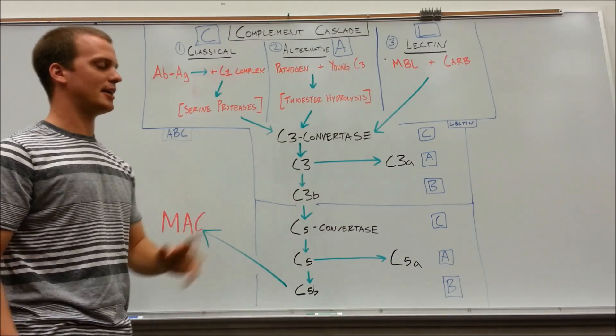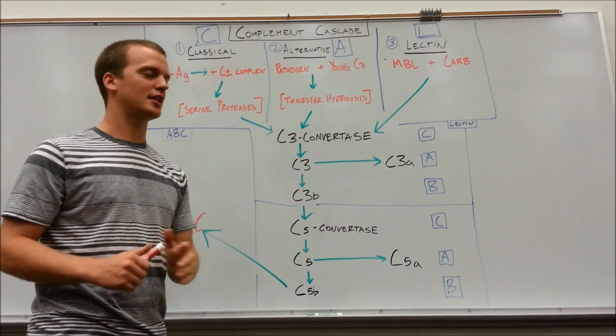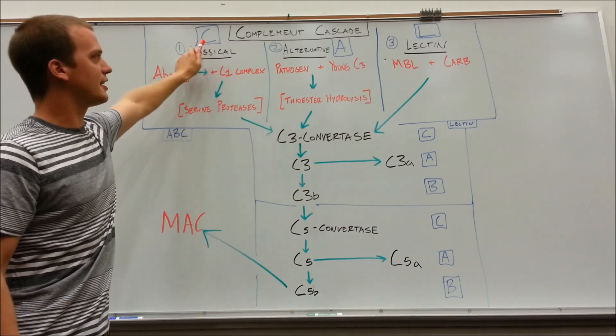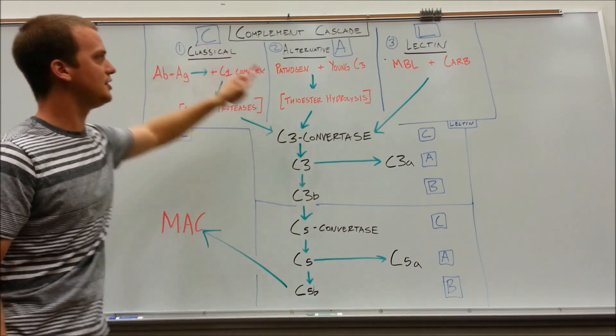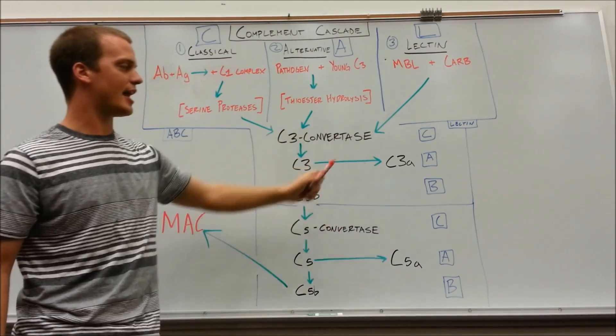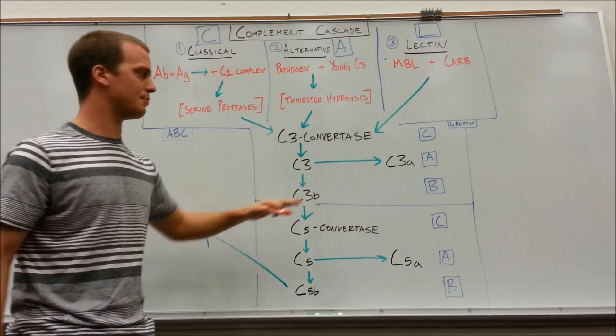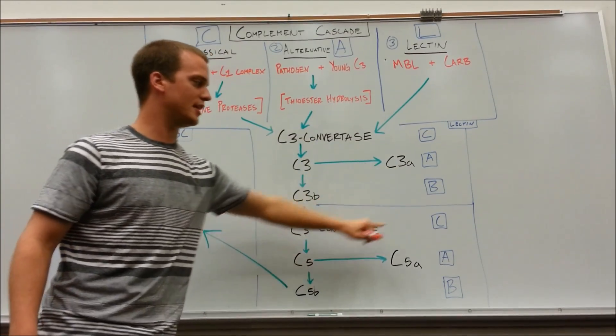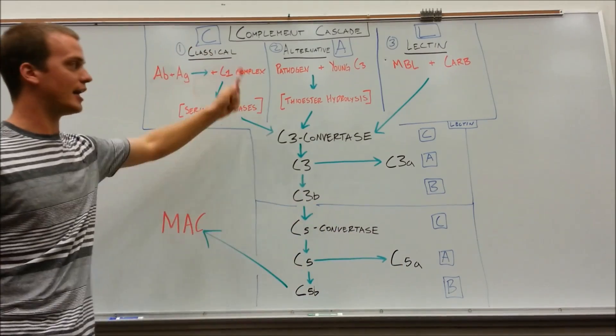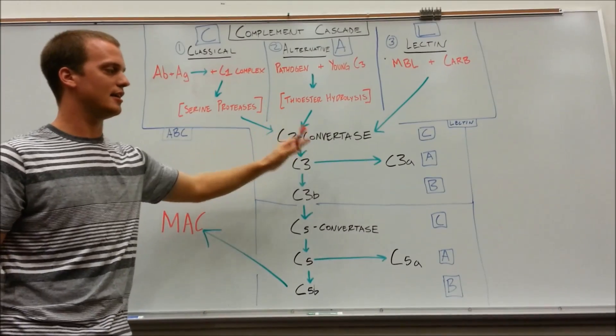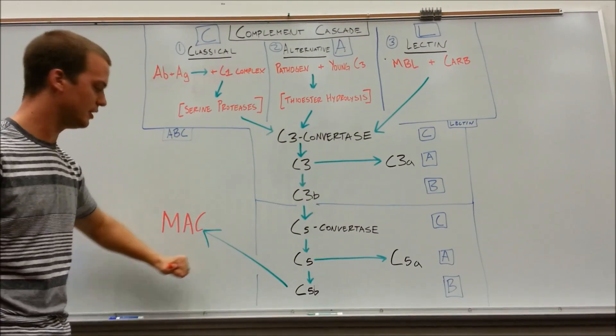Lastly, when you're setting this up, I like to draw this out if you're ever having a test on it. Your acronym for this guy is going to be CAL-CAB-CAB. That's C-A-L for classical, alternative, lectin, and then CAB-CAB. We'll get to that, but convertase is their C-A-B. Convertase is your C-A-B. CAL-CAB-CAB. Again, you have three starters that are each unique, and they'll take you to the same end pathway, same end result.